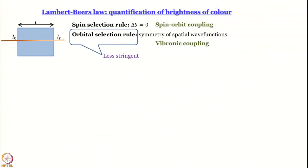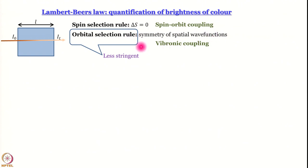First let us remember what we learned in the last module. There are selection rules. The spin selection rule, which is more stringent, requires that there cannot be any transition between a singlet and triplet state. The orbital selection rule, which is less stringent, is based on symmetry of spatial wave functions. The spin selection rule can break down because of spin-orbit coupling. The orbital selection rule can break down by vibronic coupling. All those bands you saw are actually vibronic bands — they involve not only electronic levels but also vibrational levels.